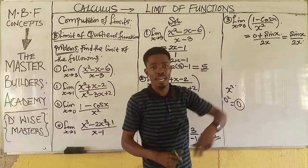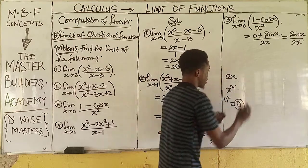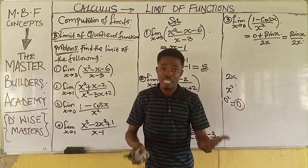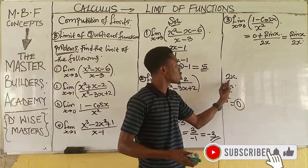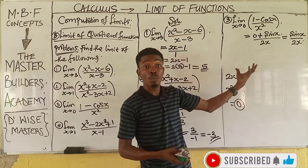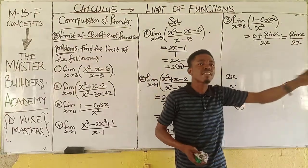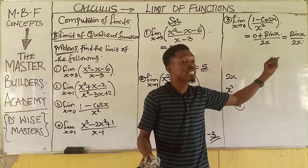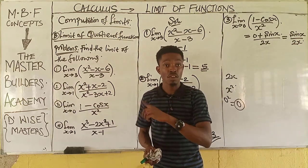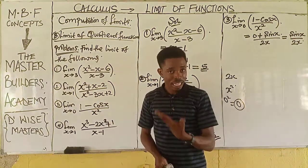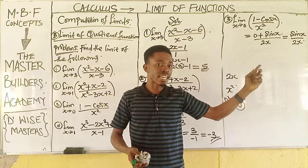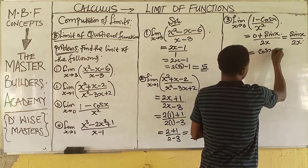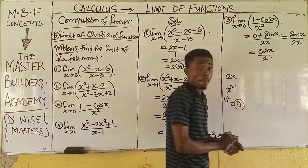We come back to the new denominator, 2x. Substituting x = 0 gives 2(0) = 0, so we still have an undefined function. We must apply L'Hôpital's rule a second time, obtaining the second derivative. We differentiate sin x to get cos x, and we differentiate 2x to get 2. This gives us cos x over 2.